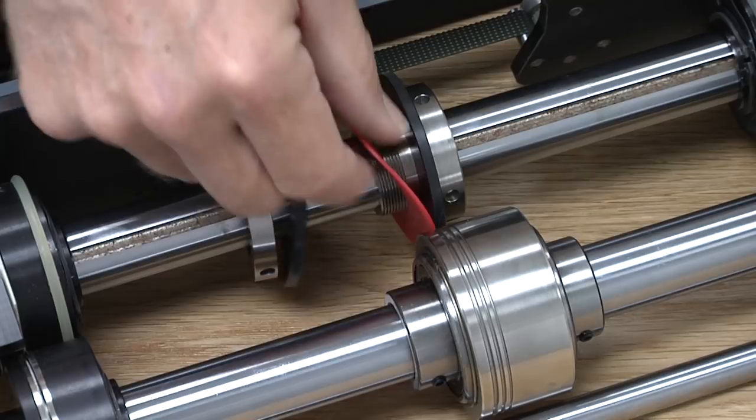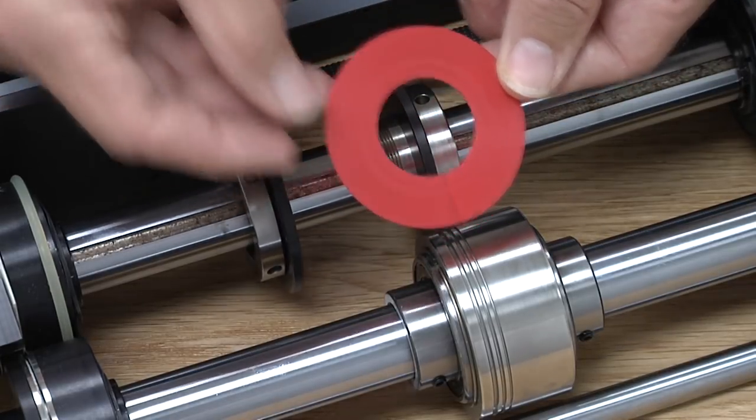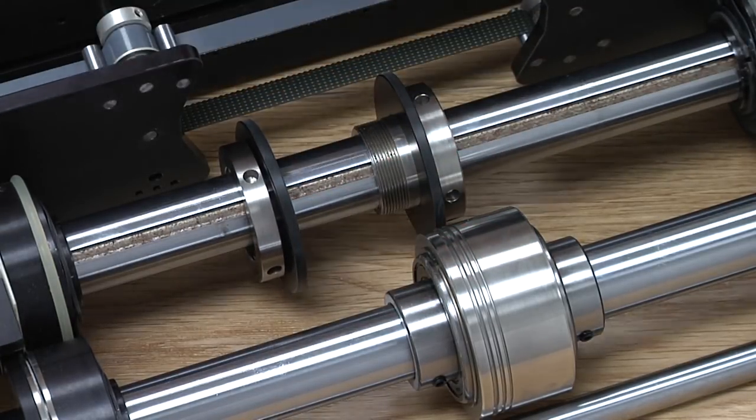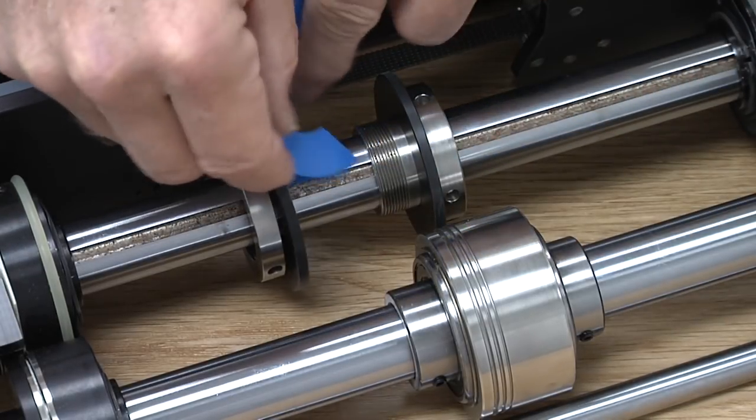When the correct scoring disc and groove are used, they produce a deep, perfect rotary score and virtually eliminate paper cracking when folded.